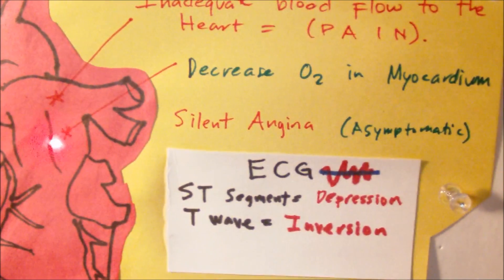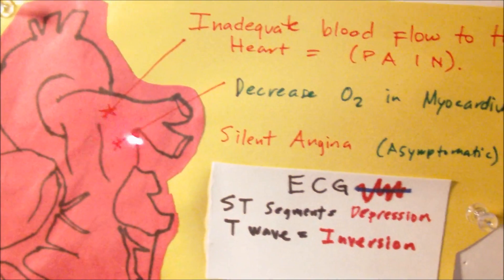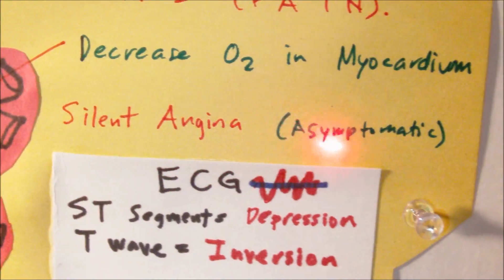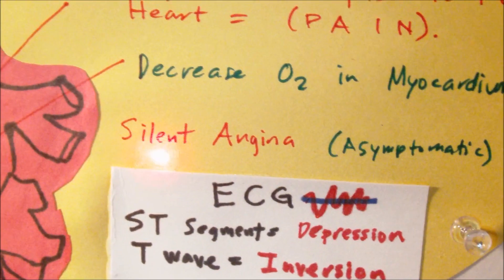There are different types of angina, but I want to talk specifically about silent angina because with silent angina it's usually asymptomatic and it's associated with diabetes and hypertension.